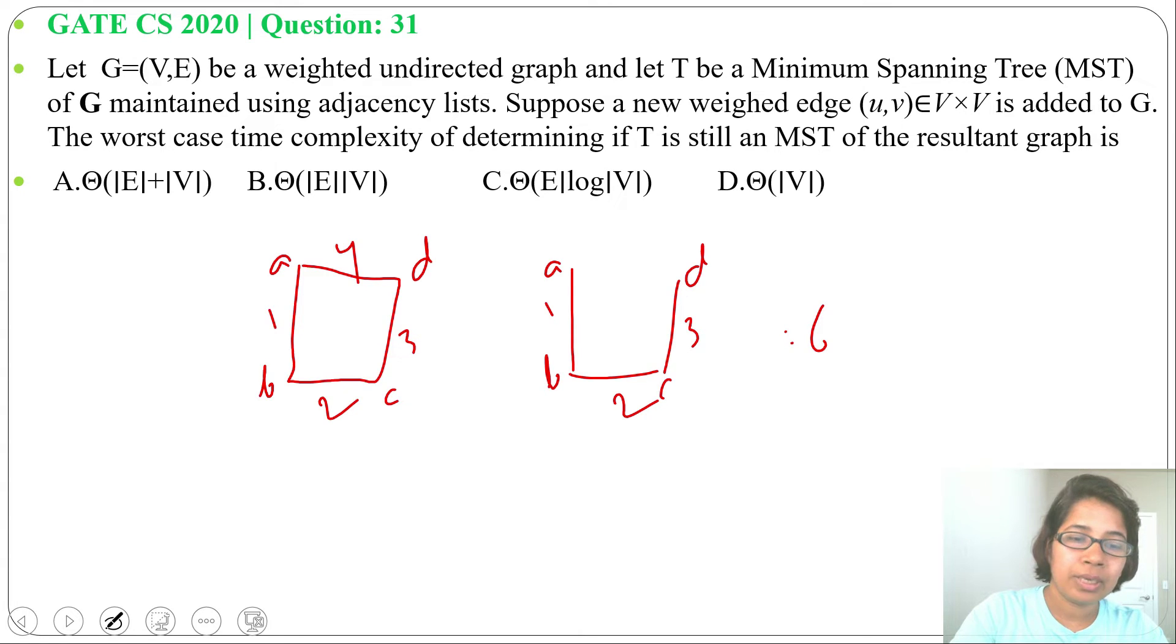If we add an edge B, D, let weight equals to 5, then to determine whether this minimum spanning tree is still minimum spanning tree of this graph or not, what will be the running time.